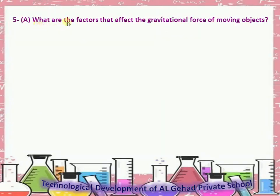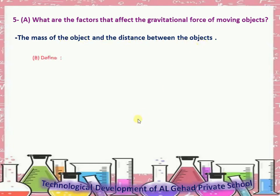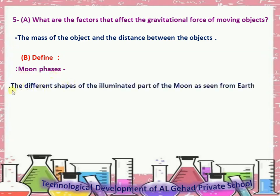What are the factors that affect the gravitational force of moving objects? The mass of an object and the distance between the objects. Define moon phases: The different shapes of the illuminated part of the moon as seen from earth.